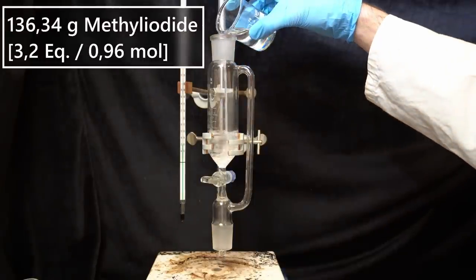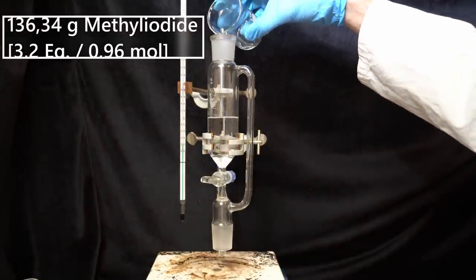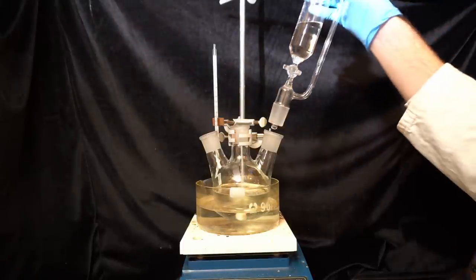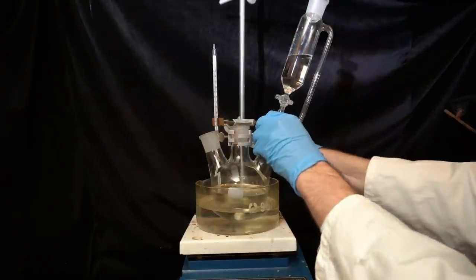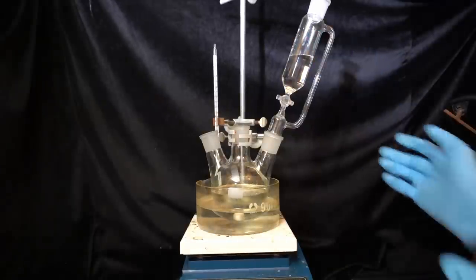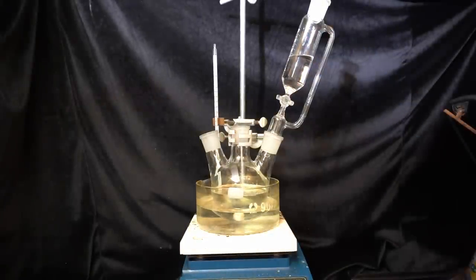136 grams of methyl iodide are transferred into a 100 milliliter addition funnel and placed on one of the side necks of the round bottom flask. The methyl iodide is used in large excess which is typical for this type of reaction which is referred to as an exhaustive methylation.